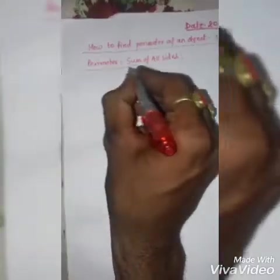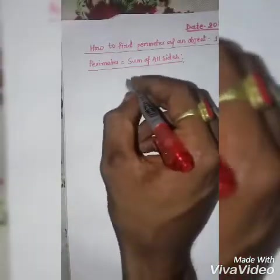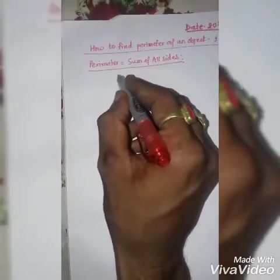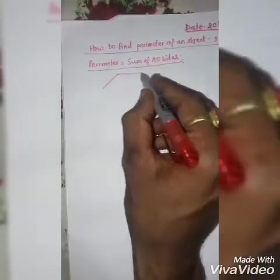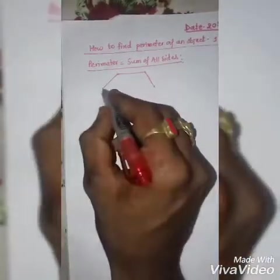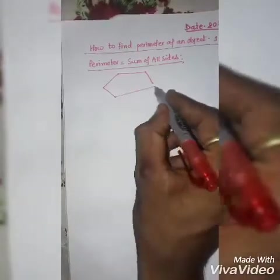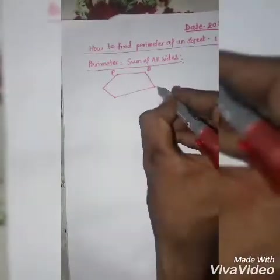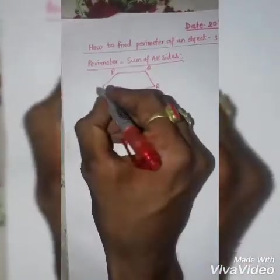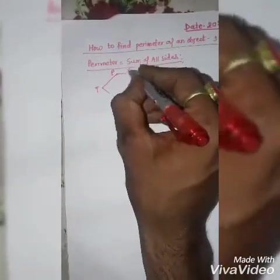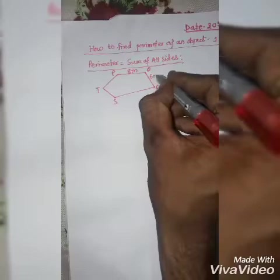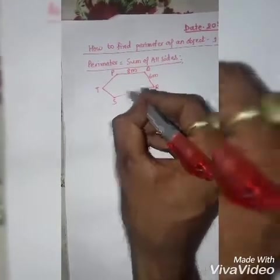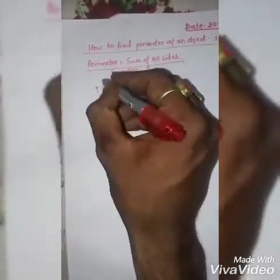It means when you add all the sides of an object, you will find the perimeter. Like I am going to create an object here, this type of object, which is technically called a pentagon. Like it is 8 meters, it is 6 meters, it is 9 meters, it is 3 meters, it is 4 meters.